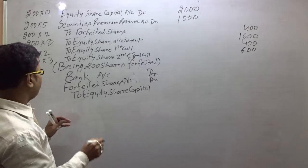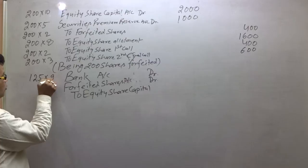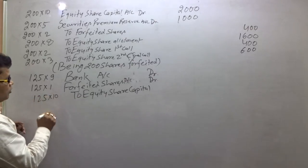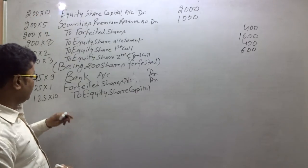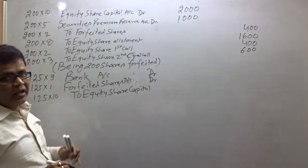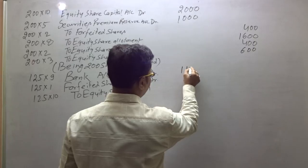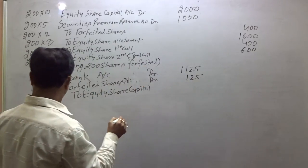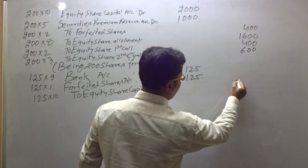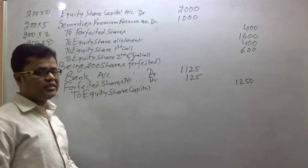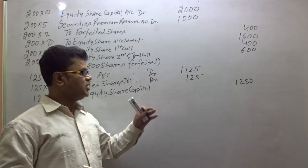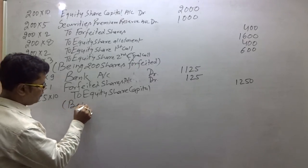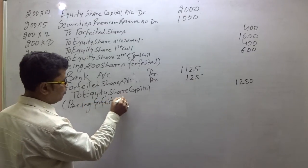The company is reissuing 125 shares at ₹9 per share. Bank: 125 × ₹9 = ₹1,125. Forfeited shares account: 125 × ₹1 = ₹125. Equity Share Capital: 125 × ₹10 = ₹1,250 (fully paid up basis).